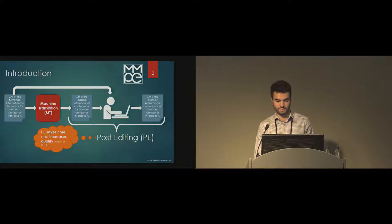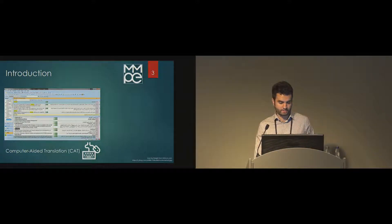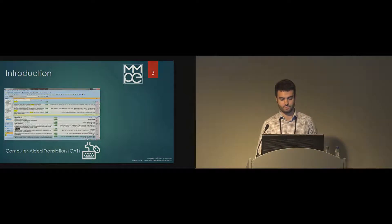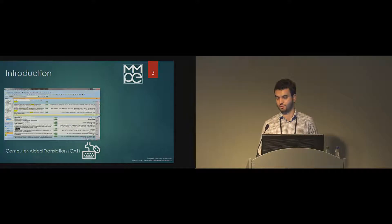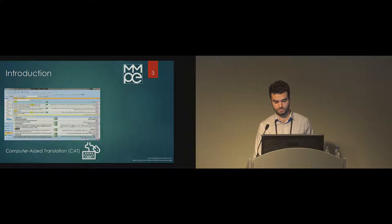Post-editing is still done in interfaces called computer-aided translation (CAT) interfaces, which come from the era of translating from scratch. On the left side you see the source language segments, on the right side the target where you basically type the text. Around that you have several support tools like translation memories and machine translations. As you can see, these interfaces are still very focused on mouse and keyboard, which made sense because you were mainly producing text.